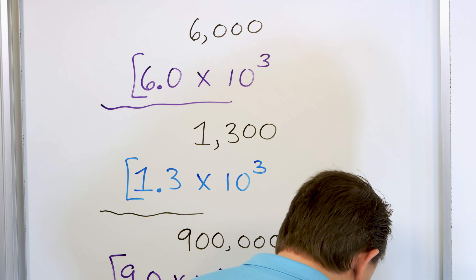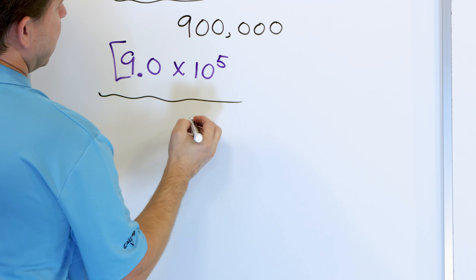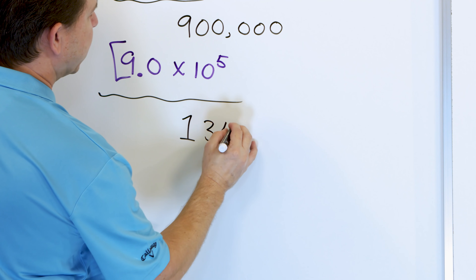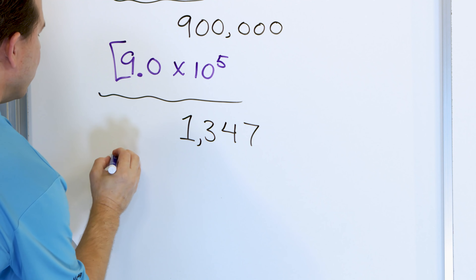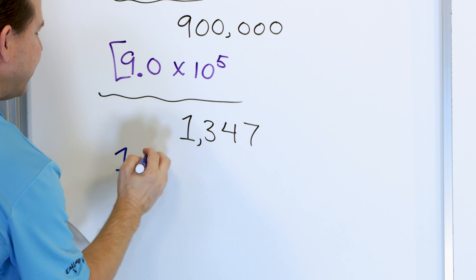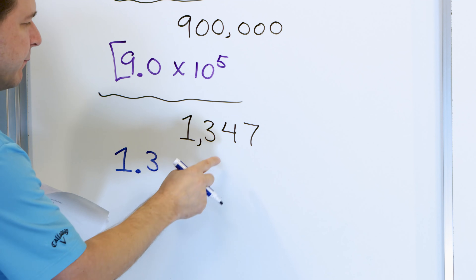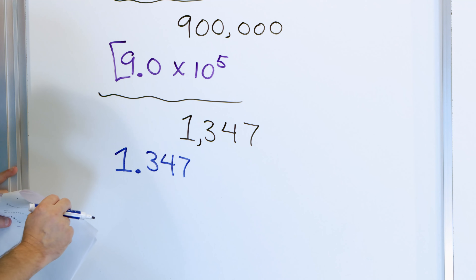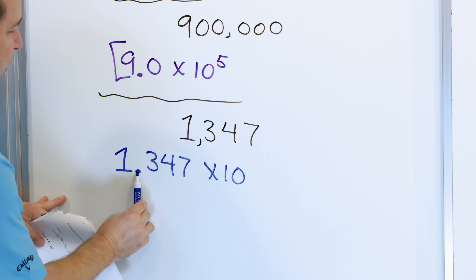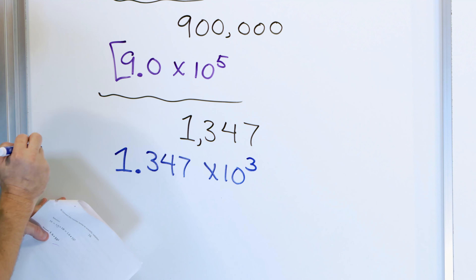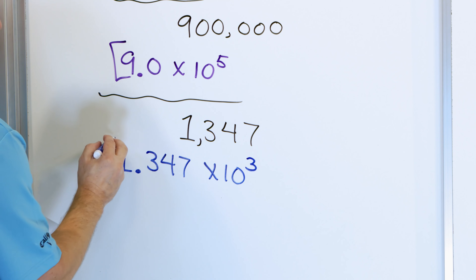Let's do one more. What about 1,347? There are a lot of digits here. You take the first digit, 1, always put a decimal point, then you have to put the 3, 4, and 7 in there too — otherwise it won't be the same number. So you have 1.347 times 10 to the what? If the decimal were after the 1, it has to go 1, 2, 3 spots. So it's 1.347 times 10 to the 3, which is 1,000, giving you 1,347.